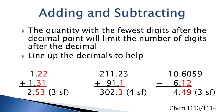When adding and subtracting numbers, the quantity with the fewest digits after the decimal point will limit the number of digits after the decimal. Sometimes it's helpful to line up the decimal points. In this first example, when these two numbers are added, both numbers have two digits after the decimal, so the answer is limited to two digits after the decimal, and this number will have three significant figures. In the middle example, the smallest value after the decimal is one, so the answer will be limited to one digit after the decimal.